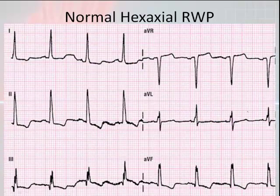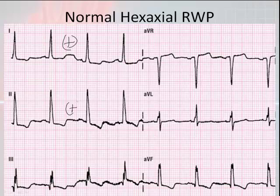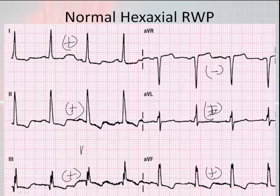Here is an example of a normal hexaxial R wave progression. Remember: lead 1 should be positive, lead 2 should be positive, lead 3 should be positive, AVR should be negative, AVL should be positive, and AVF should be positive. Since all of those are positive here, this is considered a normal R wave progression through the hexaxial leads.